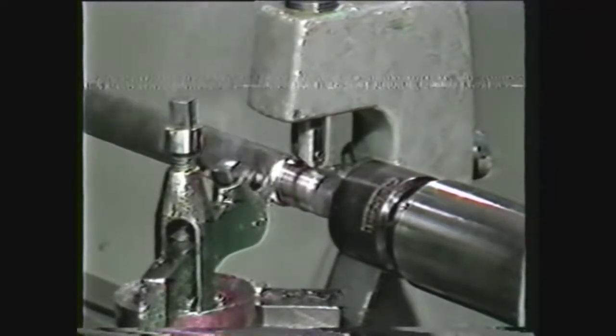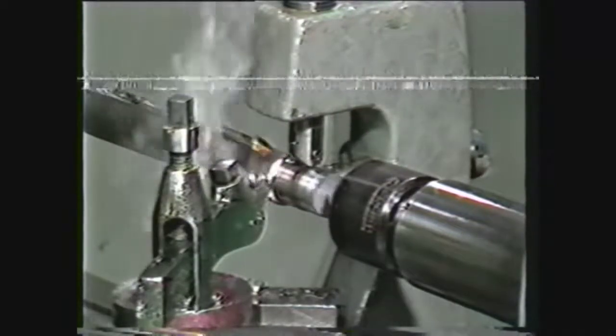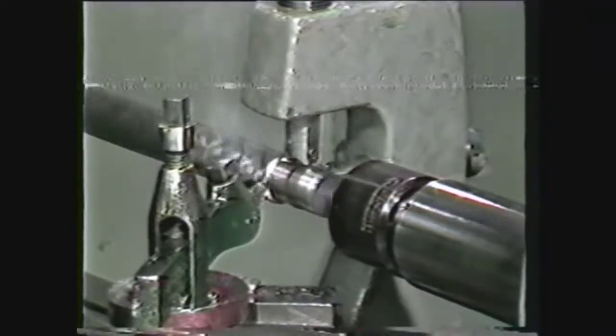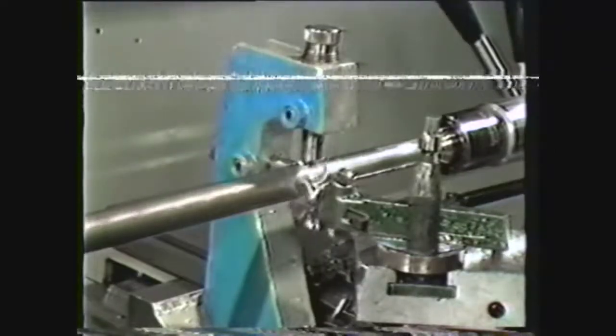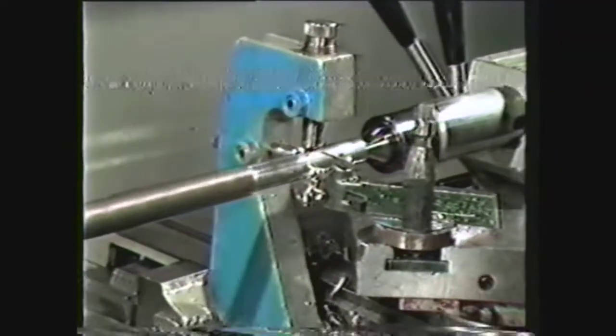When the jaws are adjusted correctly, continue the cut, applying cutting lubricant ahead of the follower rest jaws and the cutting tool. When the cut has been completed to length, use the carriage to bring the tool back to the starting point.